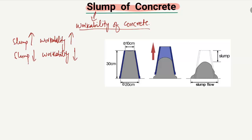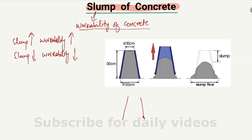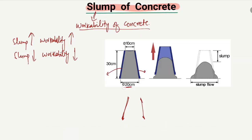Basically, there is a cone used for the concrete slump test. This cone, shown here with the blue lines, has a bottom diameter of 20 centimeters, a top diameter of 10 centimeters, and a height of 30 centimeters. This is the standard cone. The concrete is then poured into this cone.